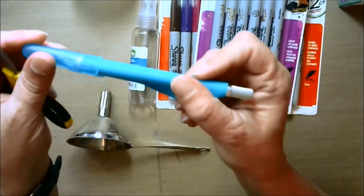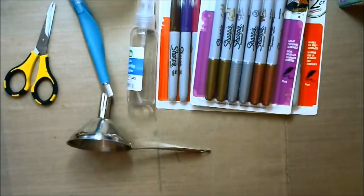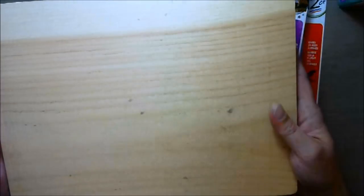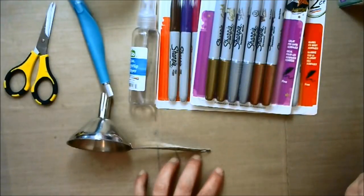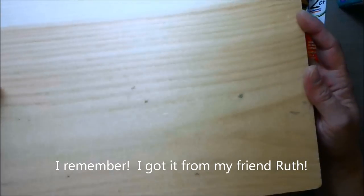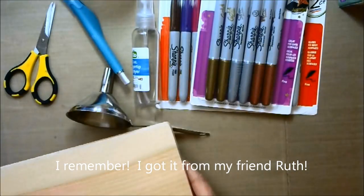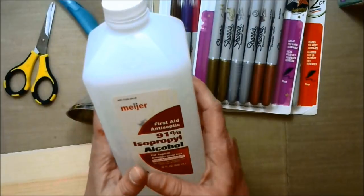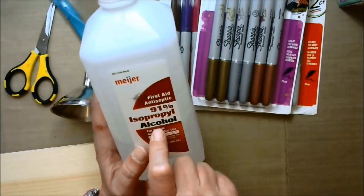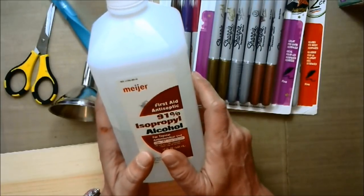You're going to want an exacto knife, sharp pair of scissors, a cutting surface because I don't like to cut on my mat. The main ingredient is isopropyl alcohol and it is 91 percent. So let me get all set up here and we'll get going.